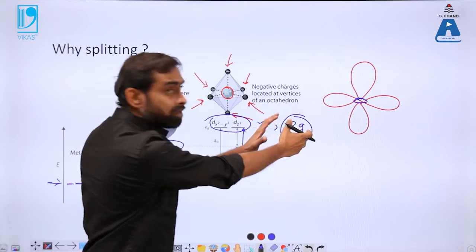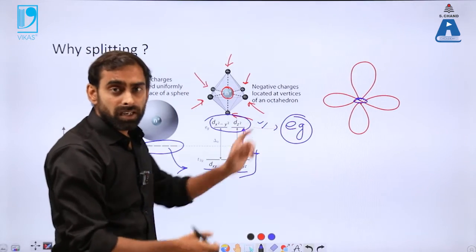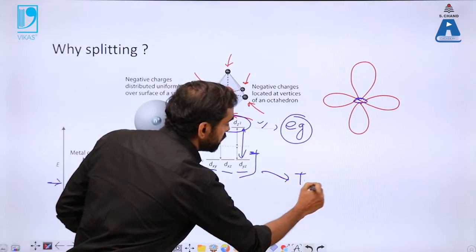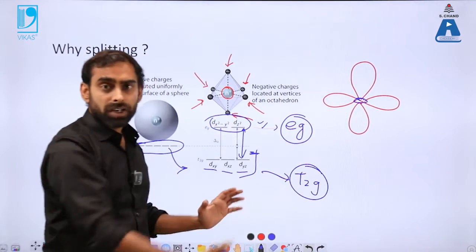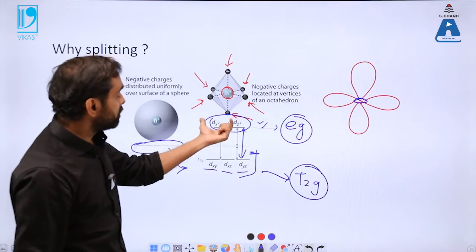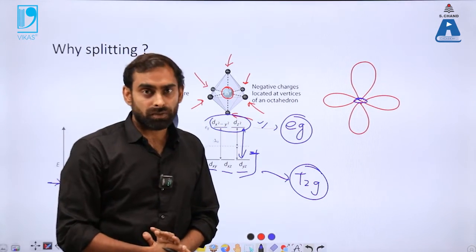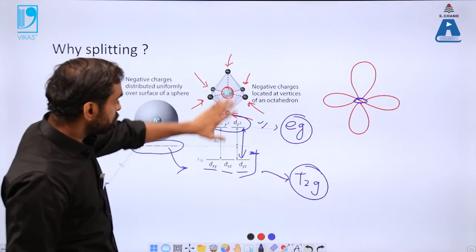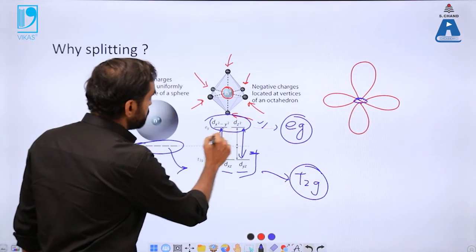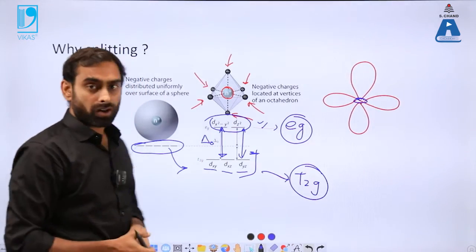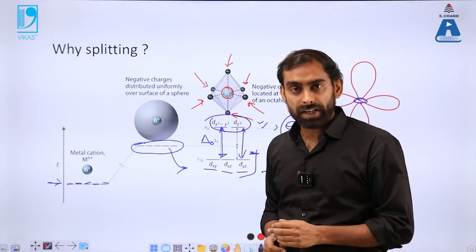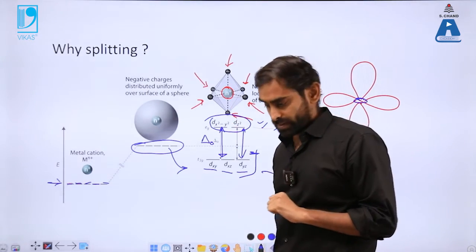They are generally termed as eg. So there is a collective term which is given to these two orbitals, eg set of orbitals. And this one is called as t2g. So from now on, we can call them as t2g set of orbitals and we can call them as eg set of orbitals. So these are two orbitals of now difference in energy and that energy gap has been represented by delta naught.